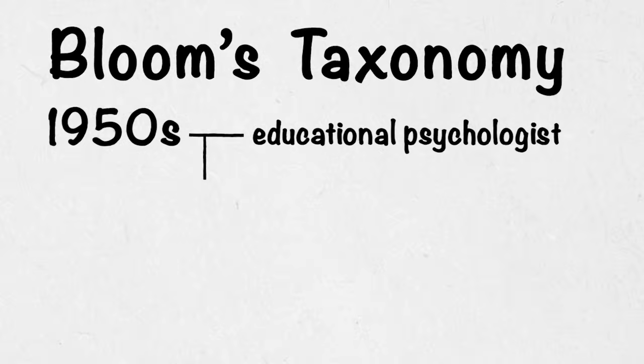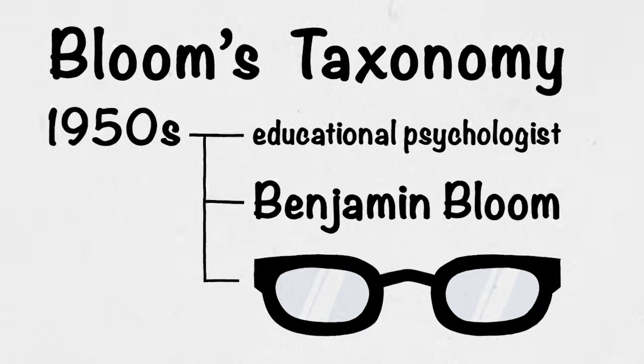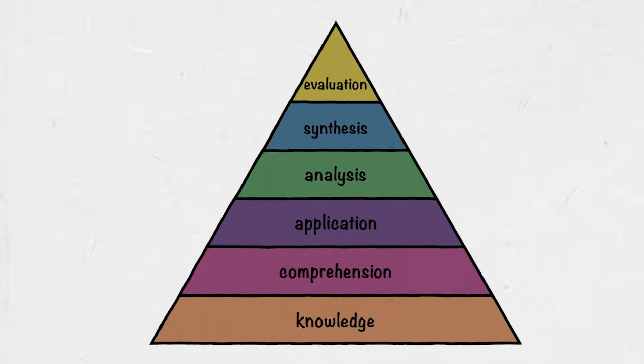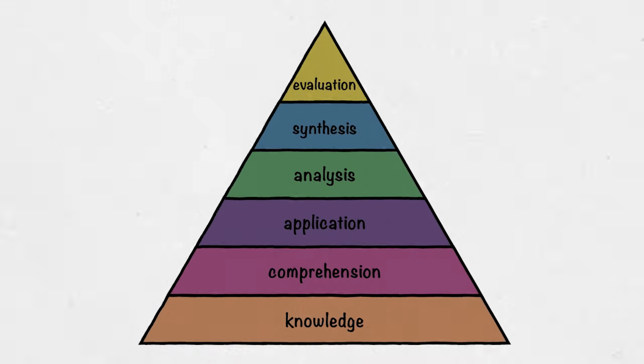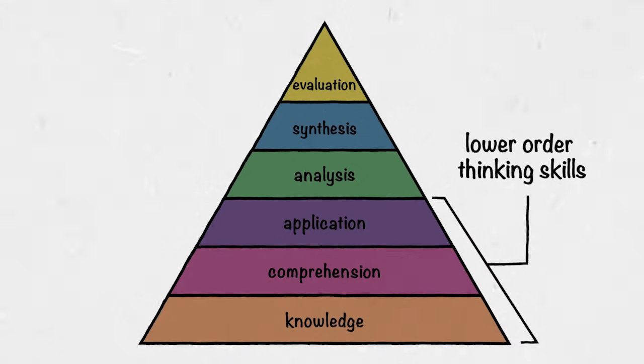Let's take a step back. Bloom's Taxonomy was created in the 1950s by educational psychologist Benjamin Bloom and his colleagues. The three lower levels - knowledge, comprehension, and application - are more basic levels of cognition, also called lower order thinking skills.